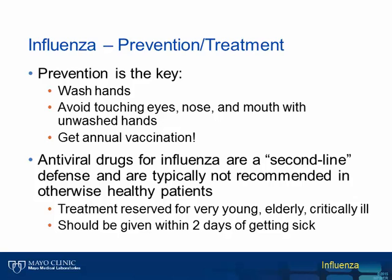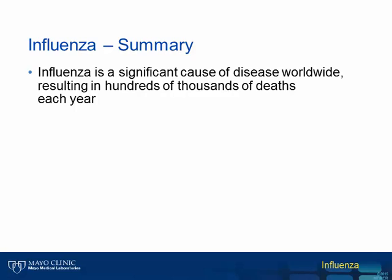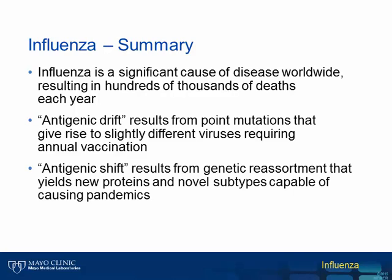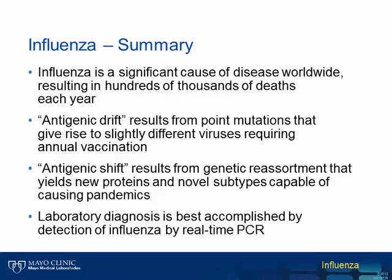In summary, influenza is a significant cause of disease worldwide, resulting in hundreds of thousands of deaths each year. Antigenic drift results from point mutations in the viral genome, giving rise to slightly different viruses — the primary reason we receive the annual influenza vaccination. Antigenic shift results from genetic reassortment that yields completely new proteins and novel subtypes capable of causing global pandemics. When laboratory testing is required, it can be best accomplished by detection of influenza virus using real-time PCR. Thanks again for joining me for this update on influenza.